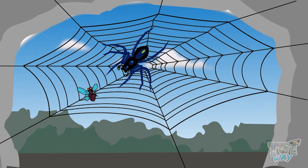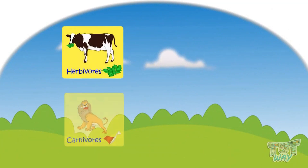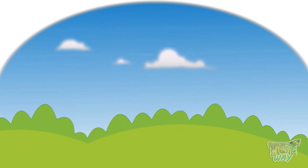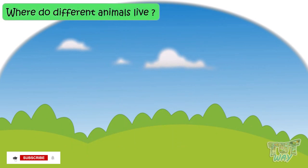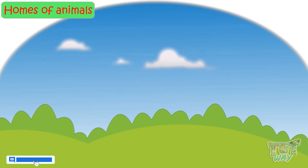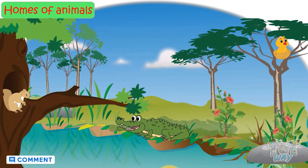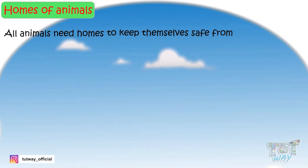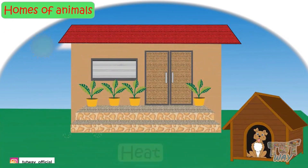So kids, we learned about what different animals eat. Now let's learn where different animals live. Just like us, animals too need a home to live in. Different animals live in different types of homes. All animals need a home to keep themselves safe from heat, cold, rain, and enemies.